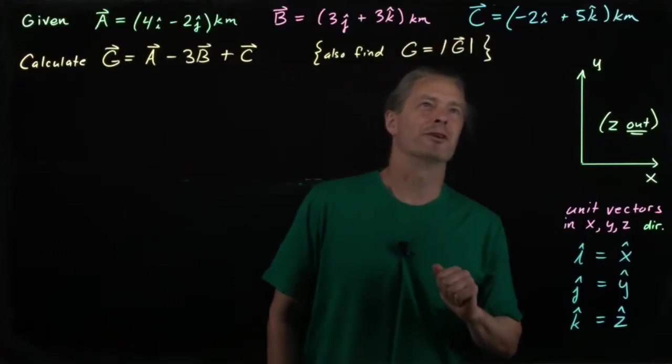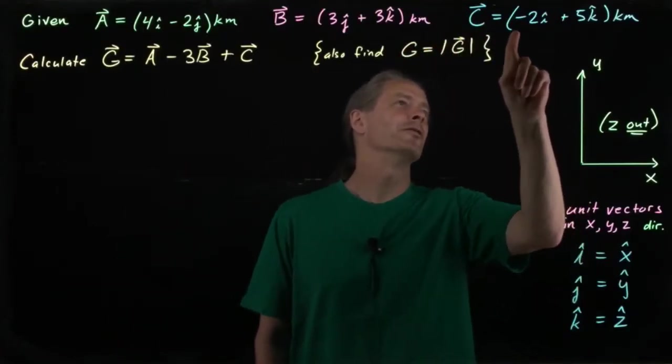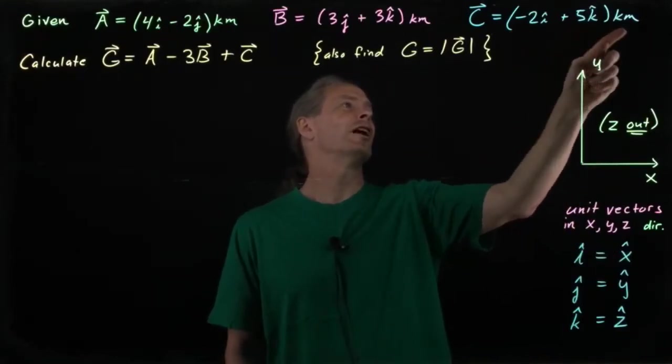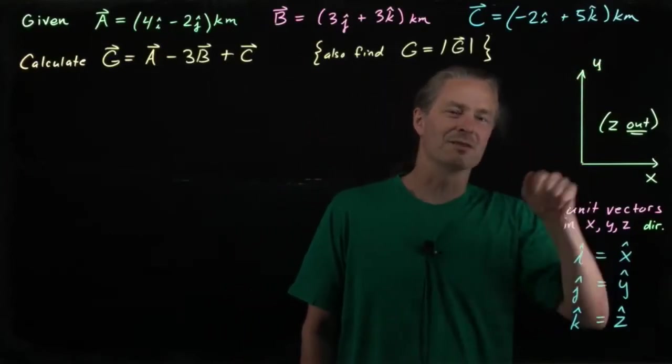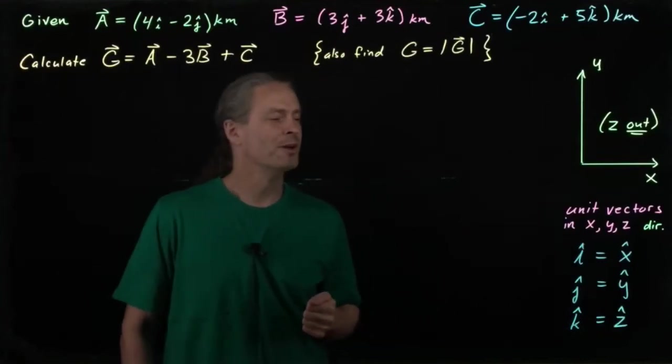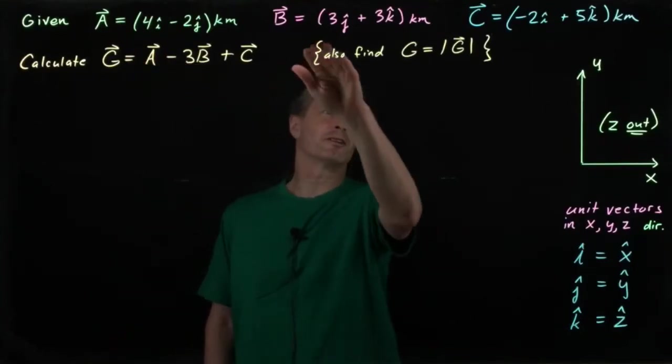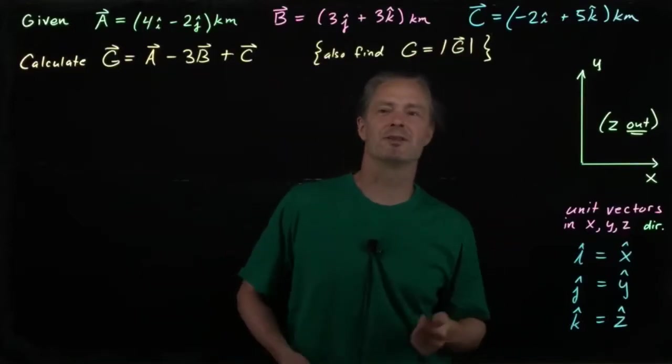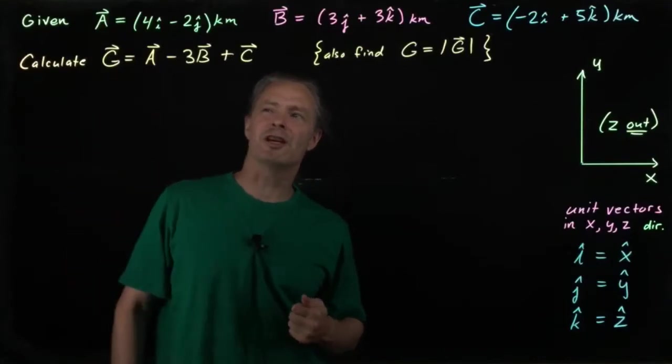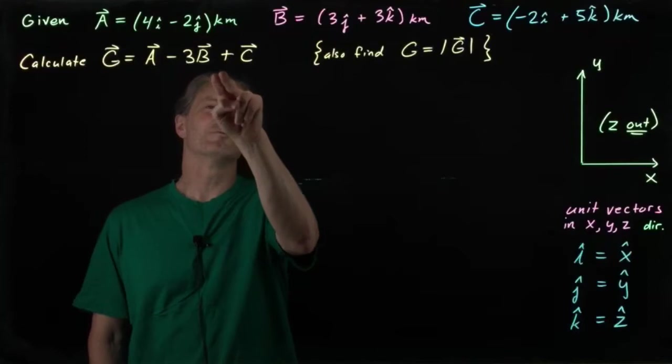Let's go to vector C over here. Vector C is a vector composed of 2 kilometers in the negative x direction and 5 kilometers in the positive z direction. And I'll leave it for you to work out what B represents. All right, so here's the problem. Given these vectors, vector A, vector B, vector C, which represent displacements, let's calculate this new vector, which I'll call vector G, which is vector A minus 3 times vector B plus vector C.